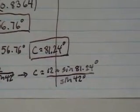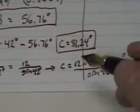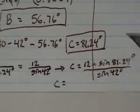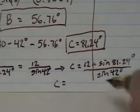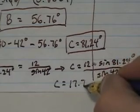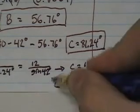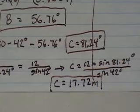And if I plug all of that into my calculator, I will get c equals 17.72 meters.